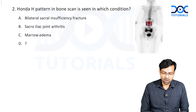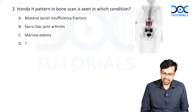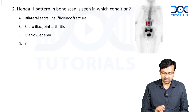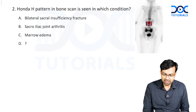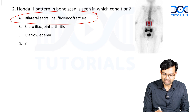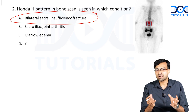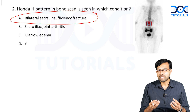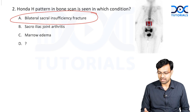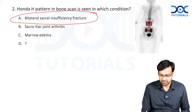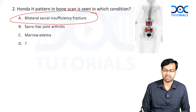Question 2: Honda H pattern in bone scan is seen in which condition? Options: bilateral sacral insufficiency fracture, sacroiliac joint arthritis, or marrow edema. This is a very straightforward one-liner. The answer is bilateral sacral insufficiency fracture. When you have bilateral sacral insufficiency fractures and you take a bone scan, there is increased uptake of contrast leading to this H-shaped appearance — this is your Honda H pattern.